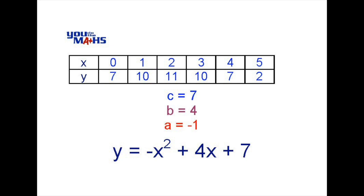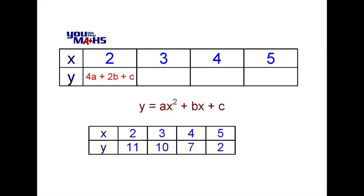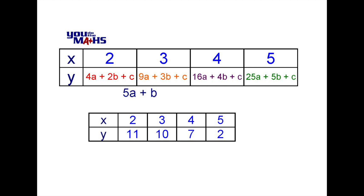Now let's go through the process without extending our original table. We'll substitute into the algebraic expression ax squared plus bx plus c. You may wish to pause here to check each of the values. Substituting x equals 2, the y value is 4a plus 2b plus c. We can go through the next few y values quite quickly — it's wise to pause to check the results. From this table we can see that the initial first difference will be 5a plus b, then 7a plus b, then 9a plus b.